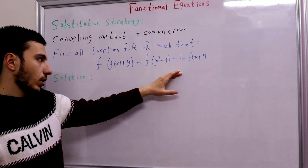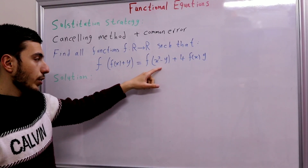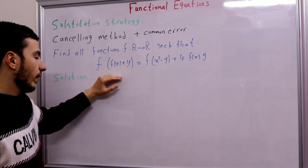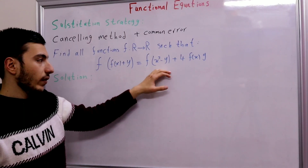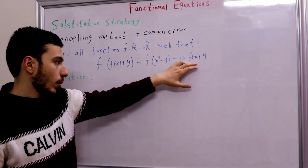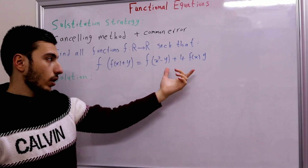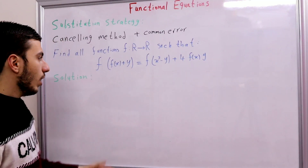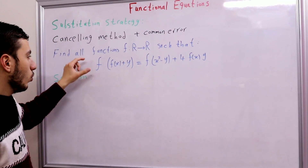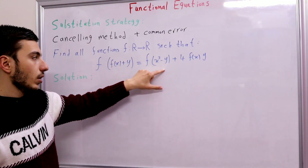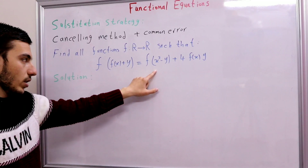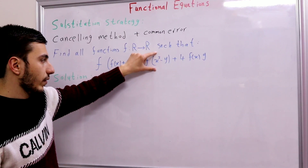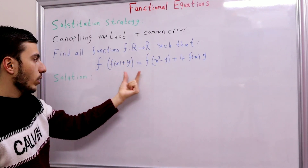What about the right-hand side? Here we also have an f with a free quantity, for the same reason — y appears with coefficient -1. So we have an f of a free quantity on the left and an f of a free quantity on the right, plus 4·f(x)·y. The idea of the cancelling method is to make the left-hand f equal to the right-hand f by forcing these two quantities to be equal.